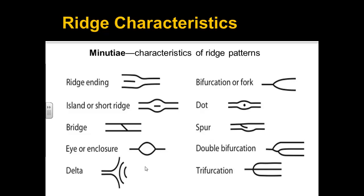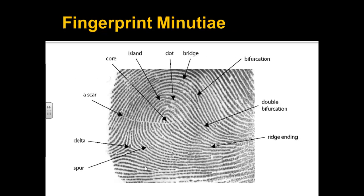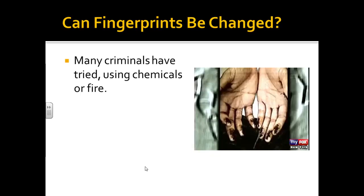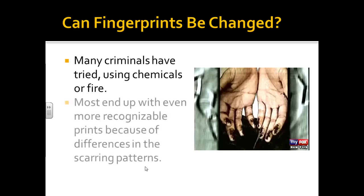Here's a real fingerprint pointing out some of the minutiae. Minutiae is a fancy word for all the little details — you do need to know that word and be able to identify various types on a fingerprint. When going to court and saying someone is guilty because their fingerprints were left behind, there need to be roughly 8 to 12 points of similarity. You can't just say it's a loop and the person is guilty — all that minutiae needs to match. Criminals try to change their fingerprints, but they end up with scars that make them even more recognizable. If you burn your fingers, once they heal you'll still have your general pattern.